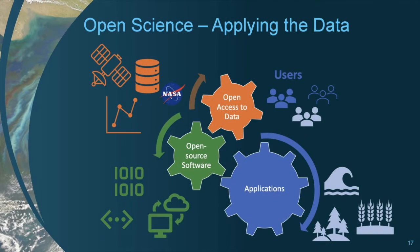NASA Earth Science data are currently being used in a vast number of applications where environmental conditions must be considered. These include food security, disasters, habitat suitability, biological diversity, disease, air quality, sea level change, and water quality. NASA provides all of these data freely and openly available to anyone in the world, which means they can be integrated into a variety of real-world, multidisciplinary applications.